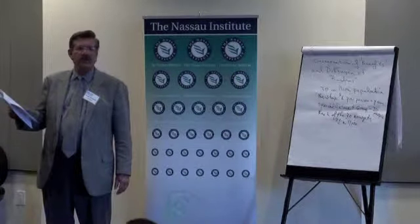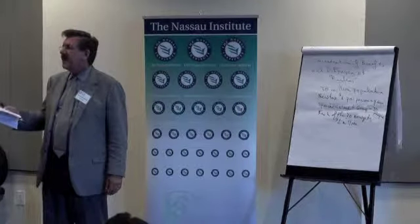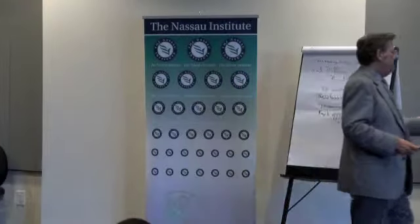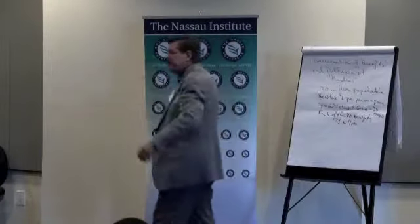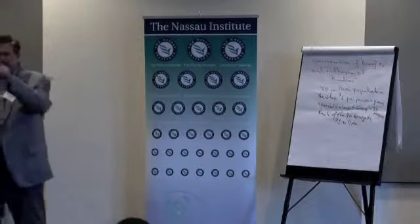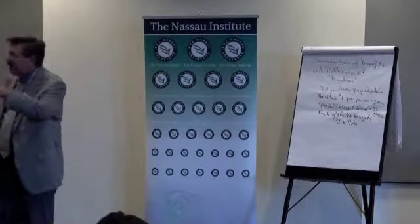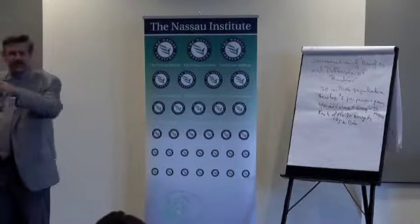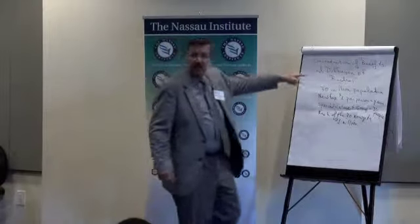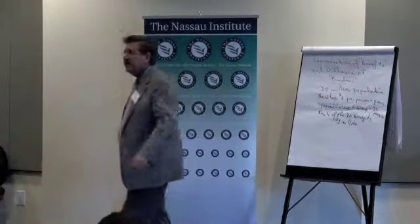Now divide that by four weeks in each month, then by the number of days in a month. So what is the per-day cost of the Department of Education for the average taxpayer? On a daily basis, it's less than a pack of cigarettes. It's less than a meal at McDonald's. But what seems like less than a meal at McDonald's on a per-day basis adds up to $68 billion.